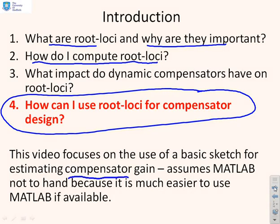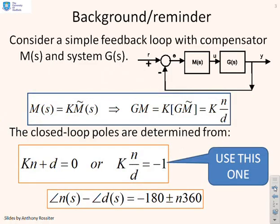All we're going to do is change the gain and ask roughly what gain do I need to get the closed-loop poles that I want. The assumption is that you haven't got MATLAB available, because if you had MATLAB it would be much quicker to use it for these computations. So as a reminder of the context, we have simple feedback loops with a compensator M and a system G.